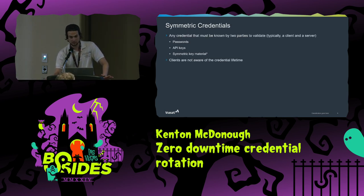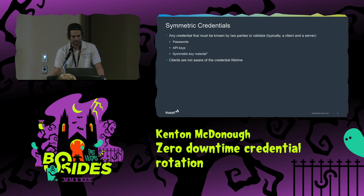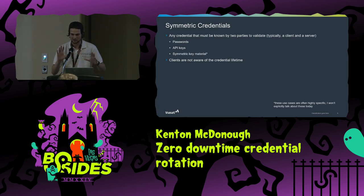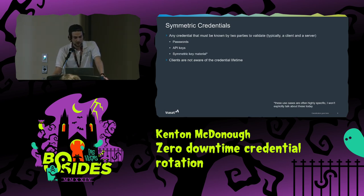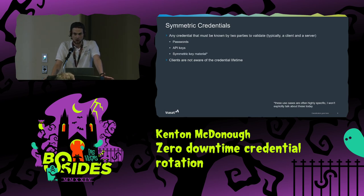There are two main types of credentials. A symmetric credential must be known by two parties to validate — typically a client talking to a server. This is an example of a password or an API key. There's typically no lifetime built into a symmetric credential, so a client doesn't know how long it lasts — as far as they're concerned, it could last forever or change five minutes from now.